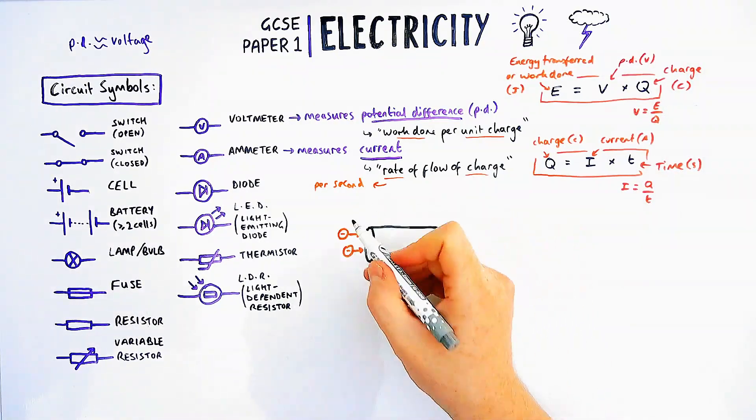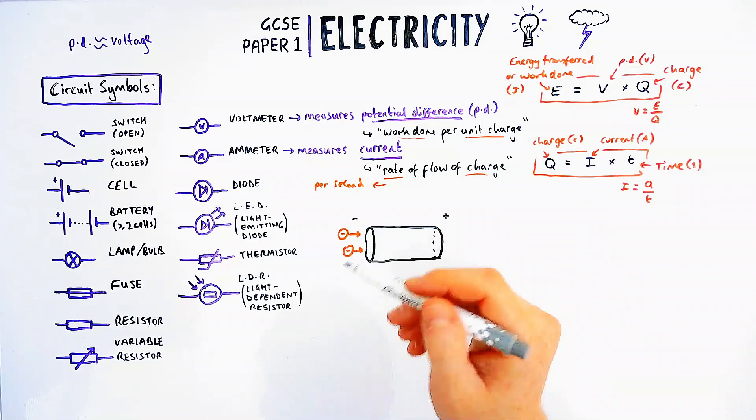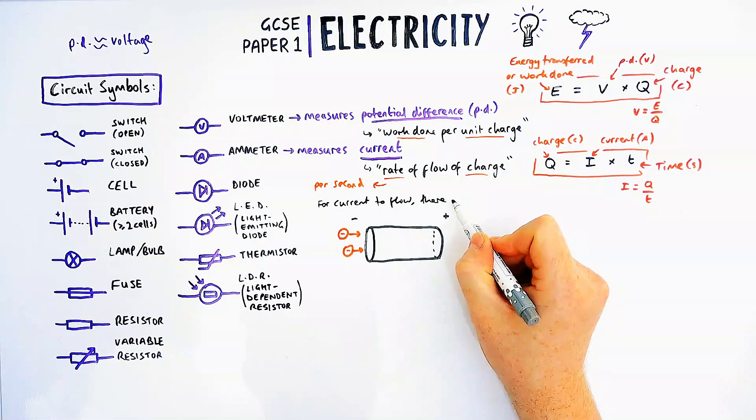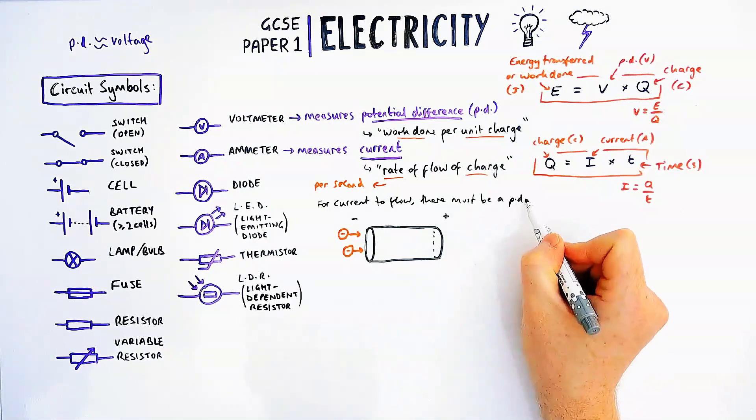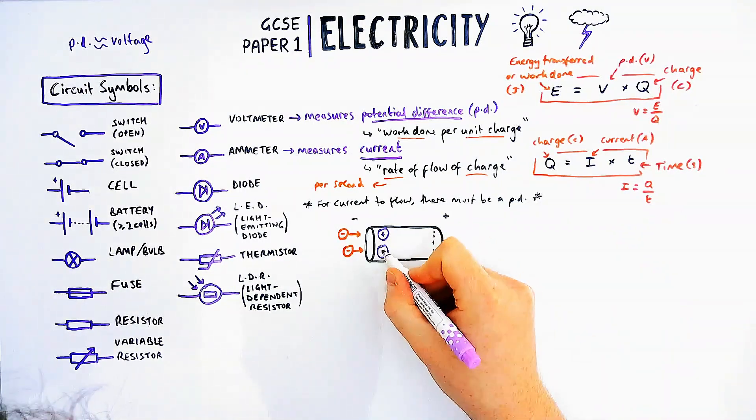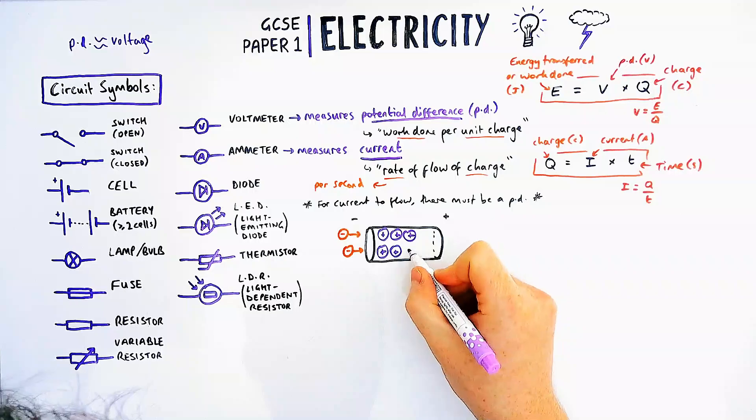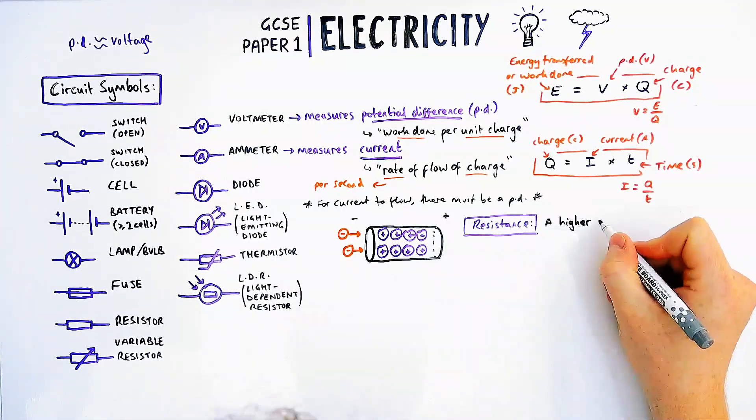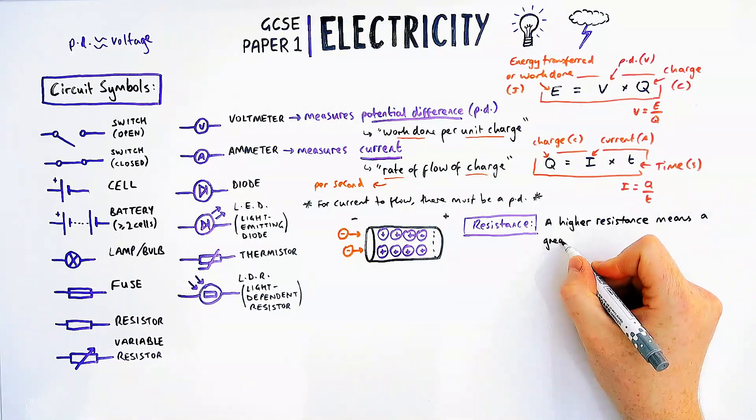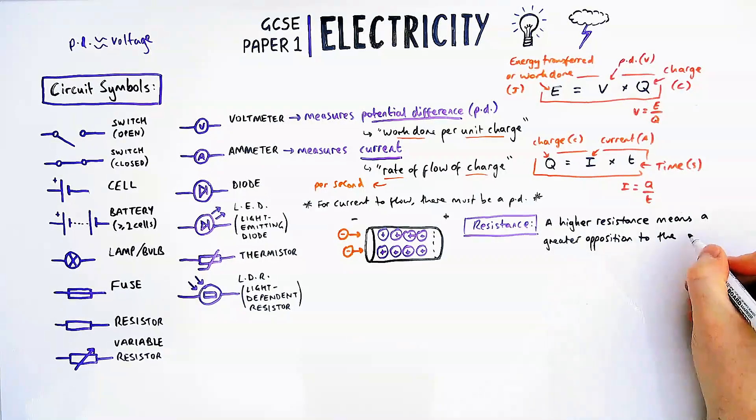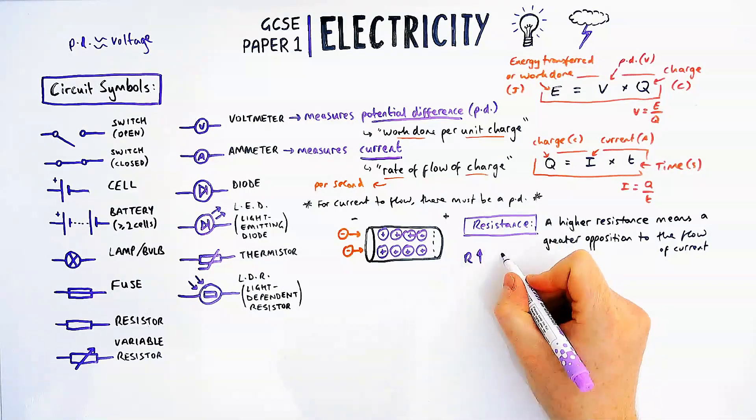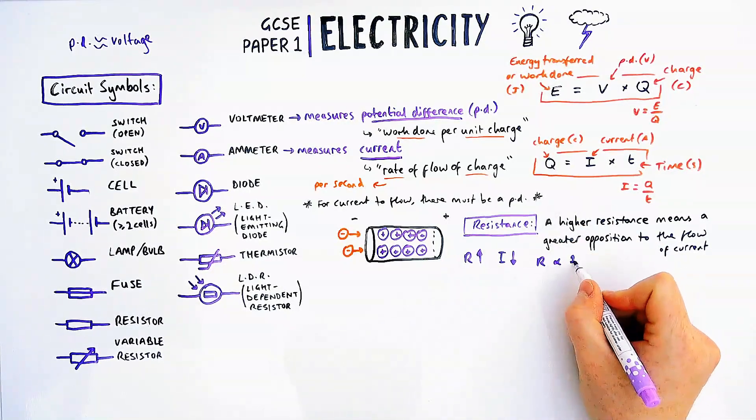Inside a circuit, for any current to flow there must be a potential difference. For these electrons here in orange to go through a wire, there must be a positive charge attracting them through the wire. As these electrons go through the wire they can encounter some resistance. A higher resistance means a greater opposition to the flow of current, so higher resistance means lower current. The technical relationship between the two is to say they are inversely proportional - if one doubled the other would half.